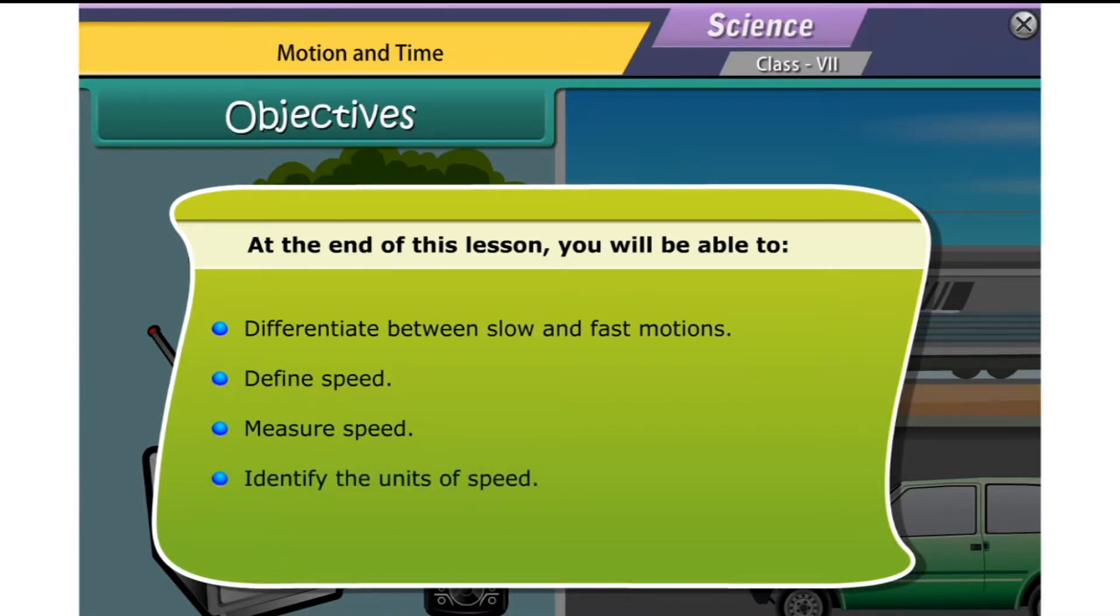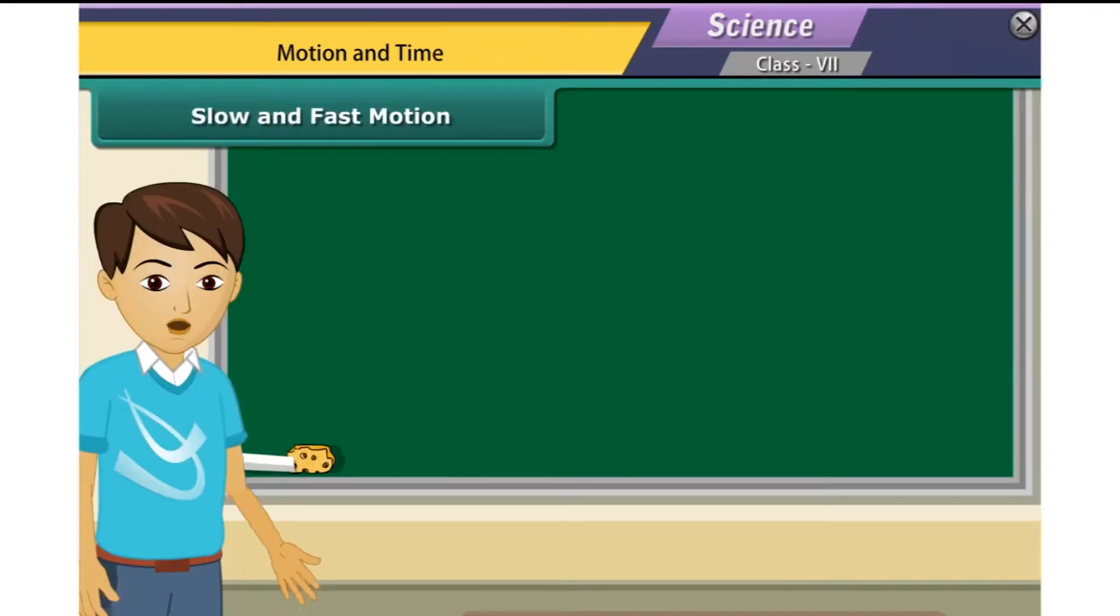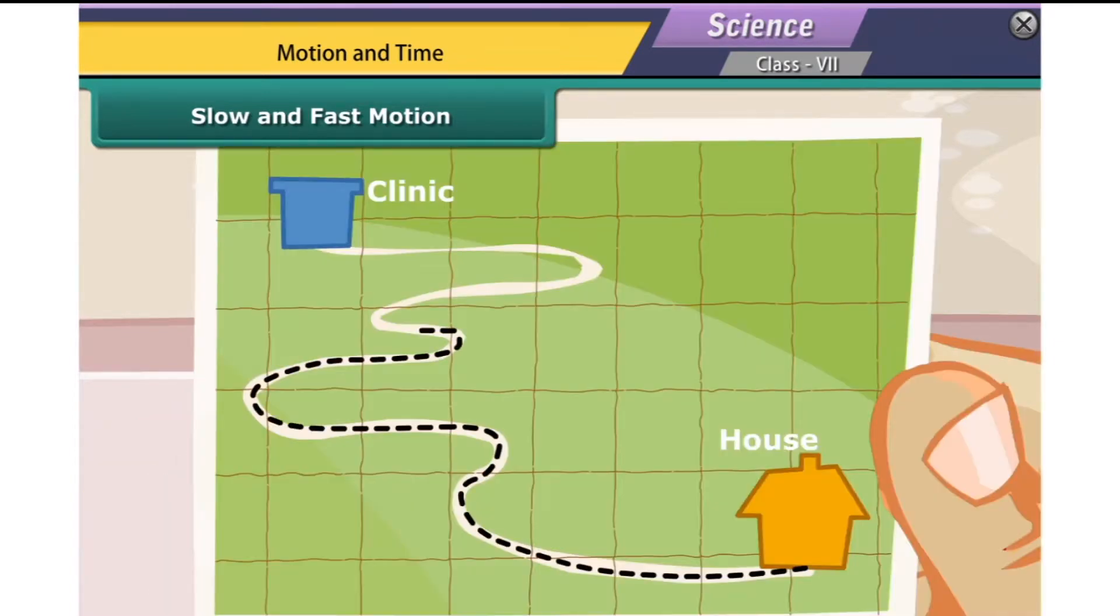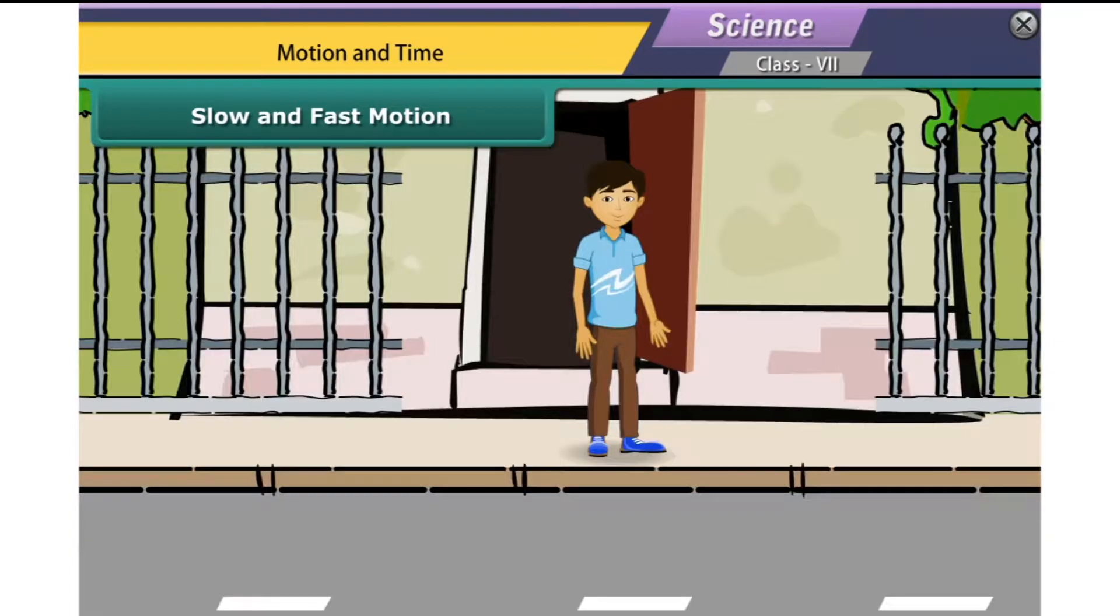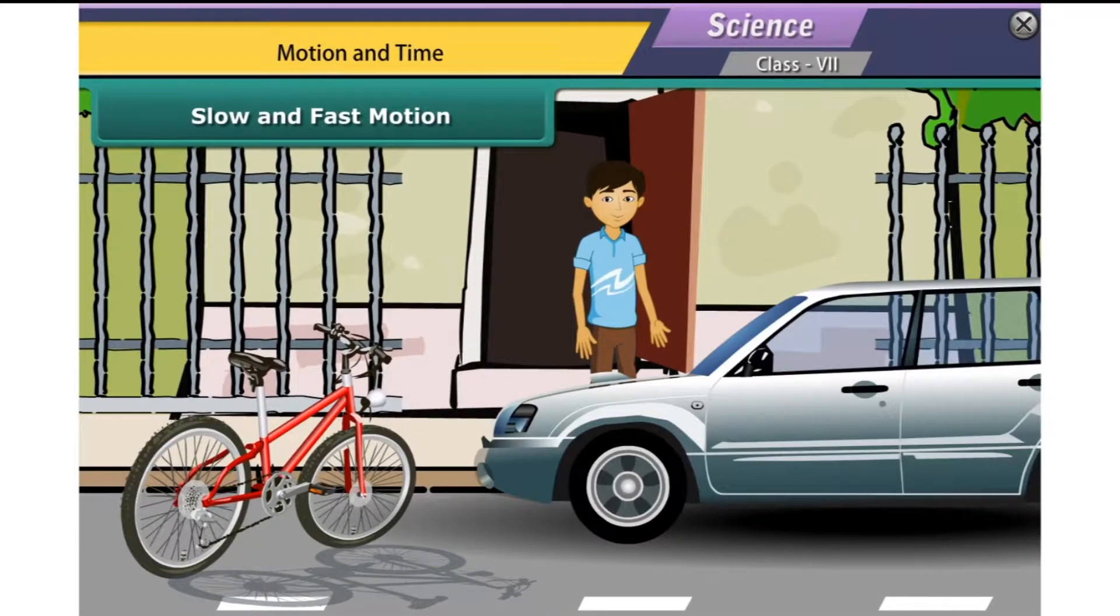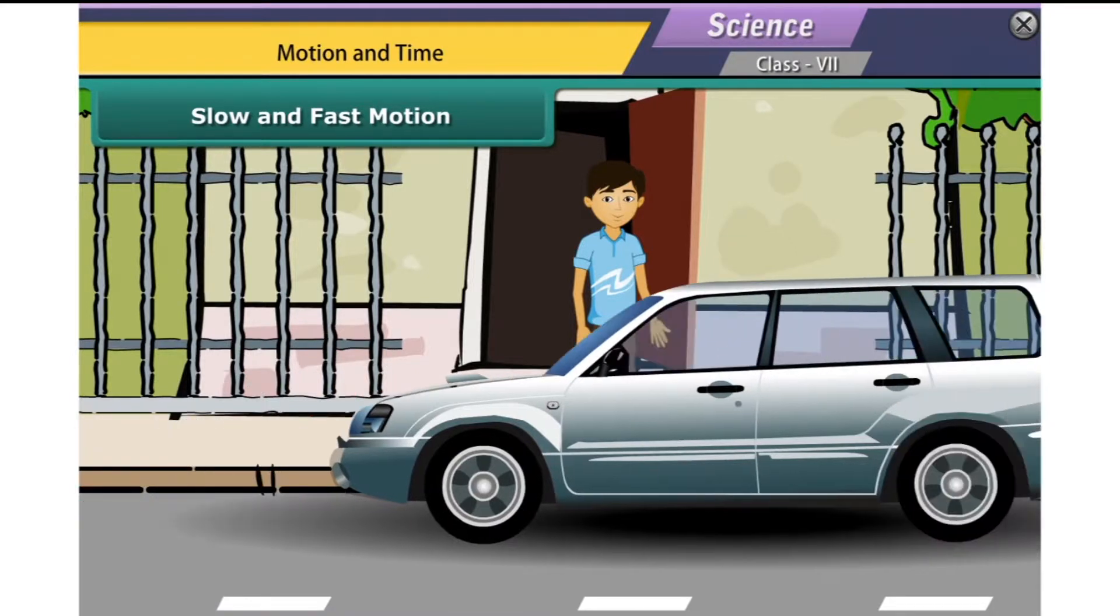Suppose you have an appointment with your doctor at 5 in the evening. It is already 4:30 pm and the doctor's clinic is 5 km away from your house. You have the choice of either cycling down or taking a taxi to the clinic. What will you do? Correct. You will take a taxi because a taxi is faster than a cycle.